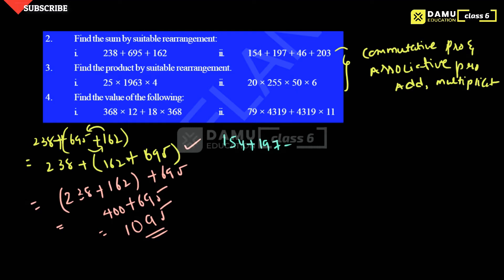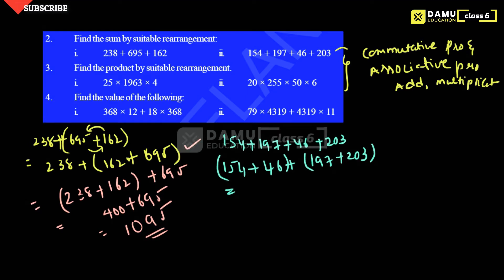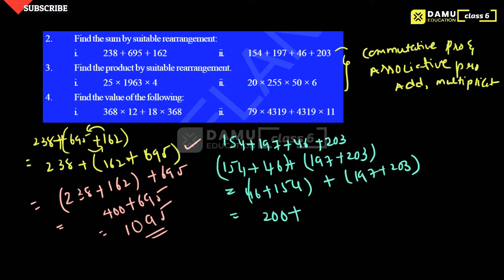Next: 154 plus 197 plus 46 plus 203. We rearrange to 154 plus 46 plus 197 plus 203, using associative and commutative properties. Then 154 plus 46 equals 200, and 197 plus 203 equals 400, so 200 plus 400 gives us 600.